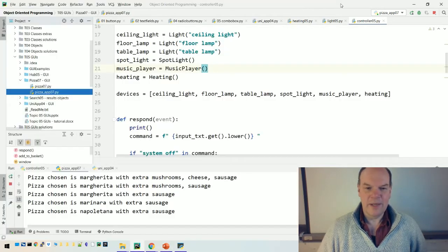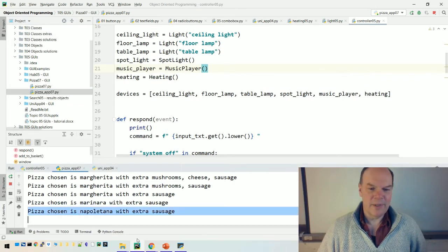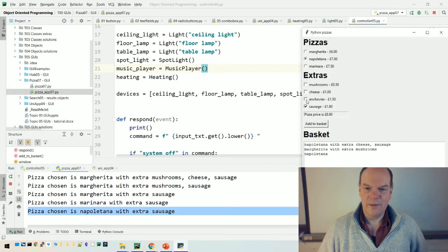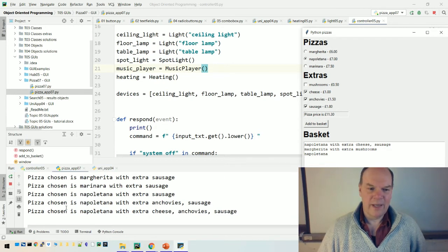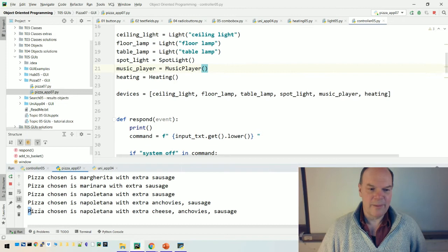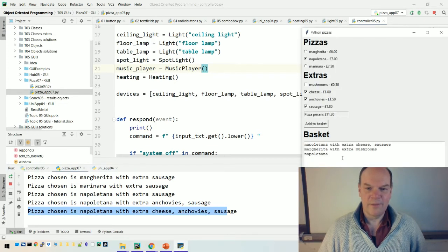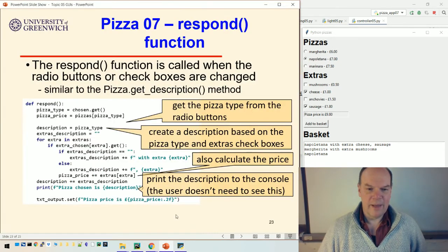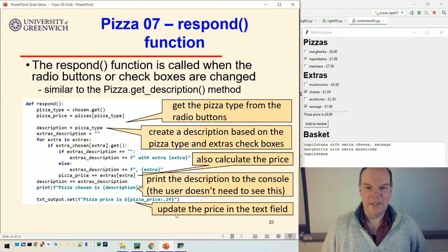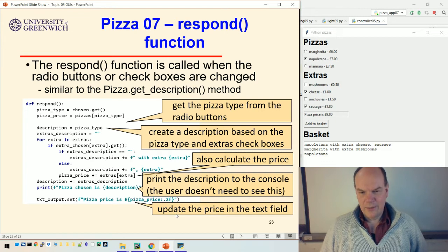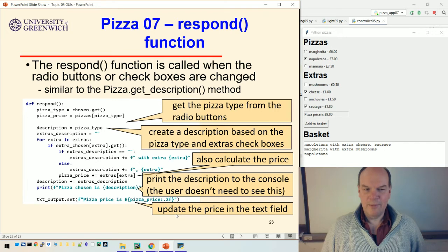So as I'm changing the radio buttons, let's show you that. The console gets the output. The user doesn't need to see this text here because they can already see it on the GUI. But they do need to see the price. And so as we check these check boxes, the other thing that happens is that it updates the price in the text field. So we try and keep the user informed about what their price or what they've chosen is. That's one function, but that's very similar to the functions that we've seen before for working out the price and the description of the pizza.